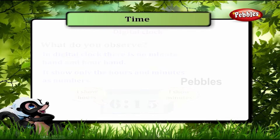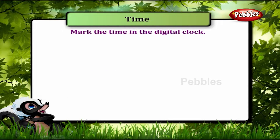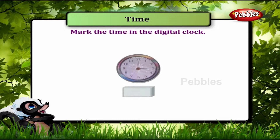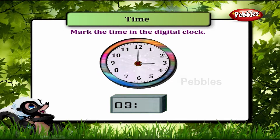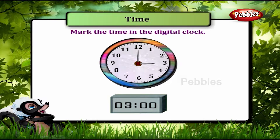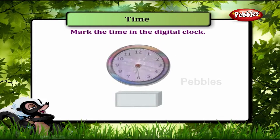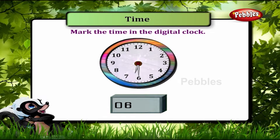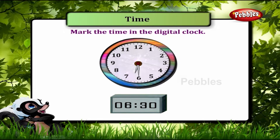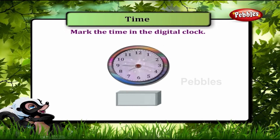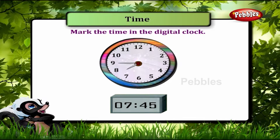Mark the time in the digital clock. 3:00. 06:30. 07:45.